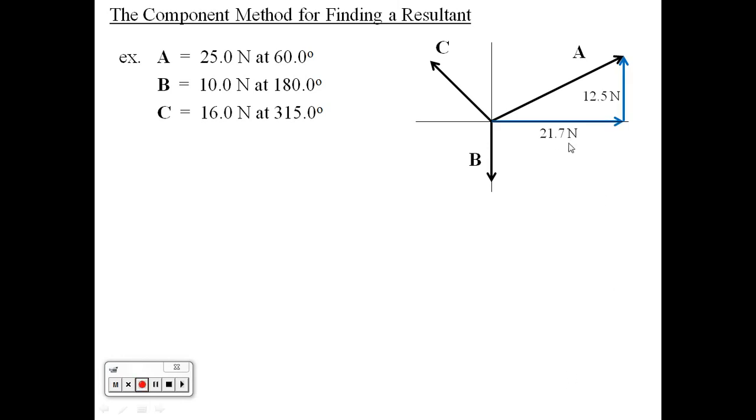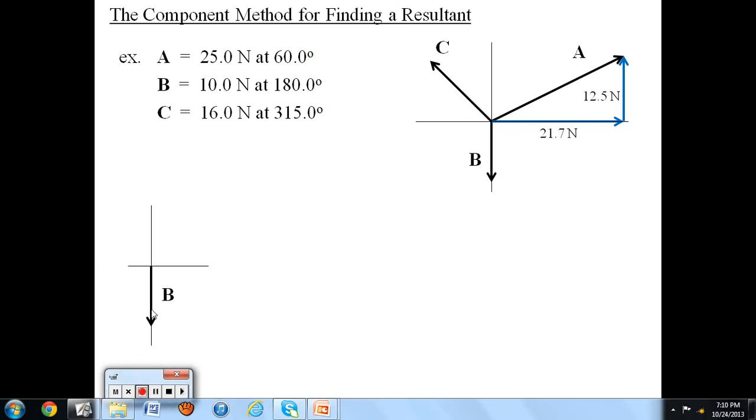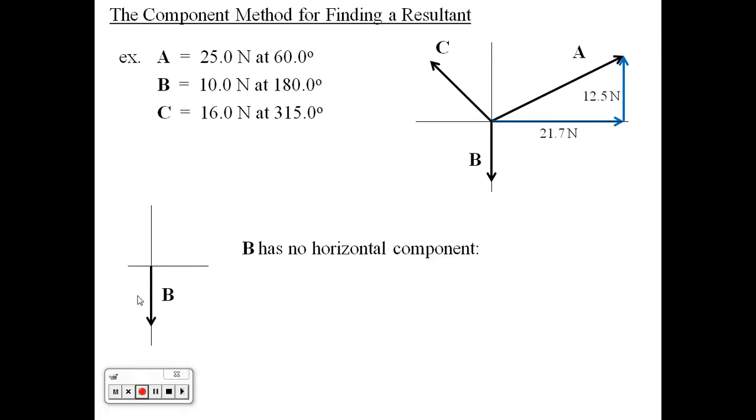Now let's deal with vector B. Vector B, notice, is completely vertical. So B has no horizontal component. We would say that B sub X is equal to 0. And we can say that B sub Y is completely vertical, so it's 10 Newtons.